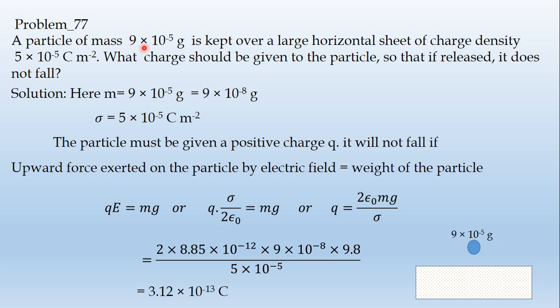A particle of mass 9 into 10 to the power minus 5 gram is kept over a large horizontal sheet of charge density 5 into 10 to the power minus 5 coulomb meter to the power minus 2. What charge should be given to the particle so that if released it does not fall?